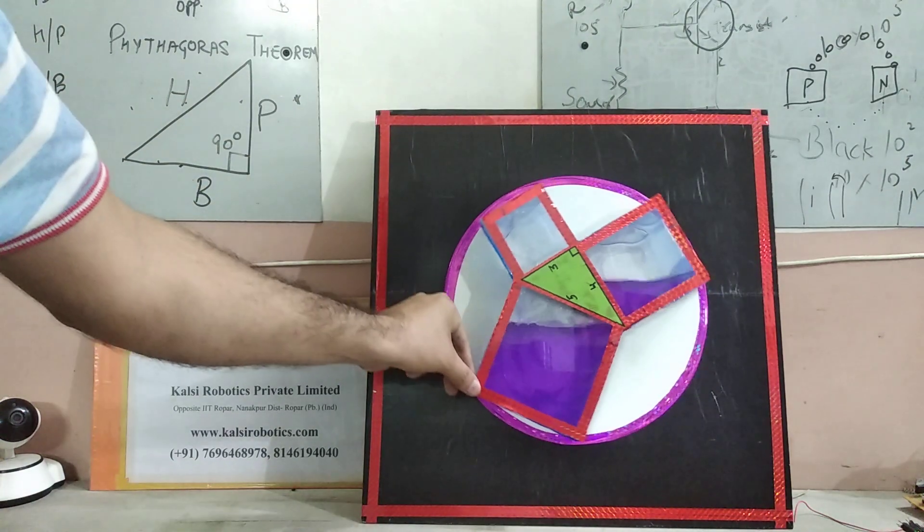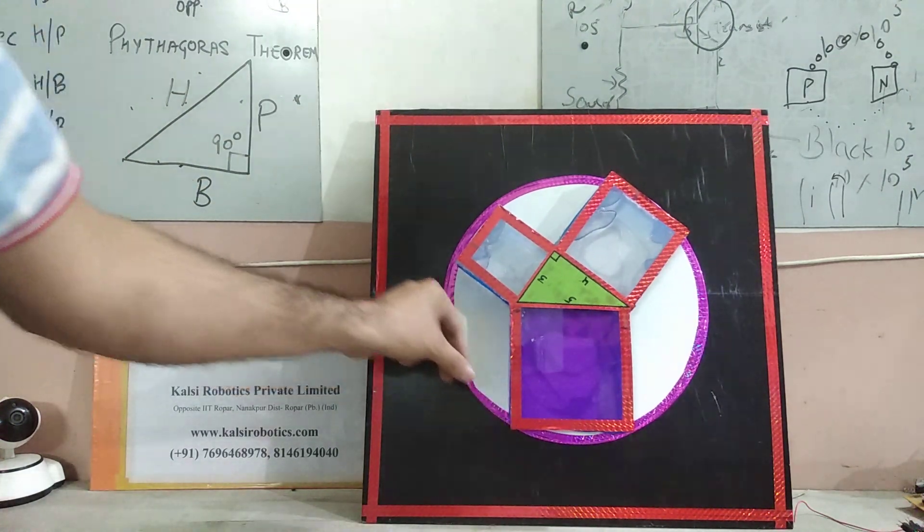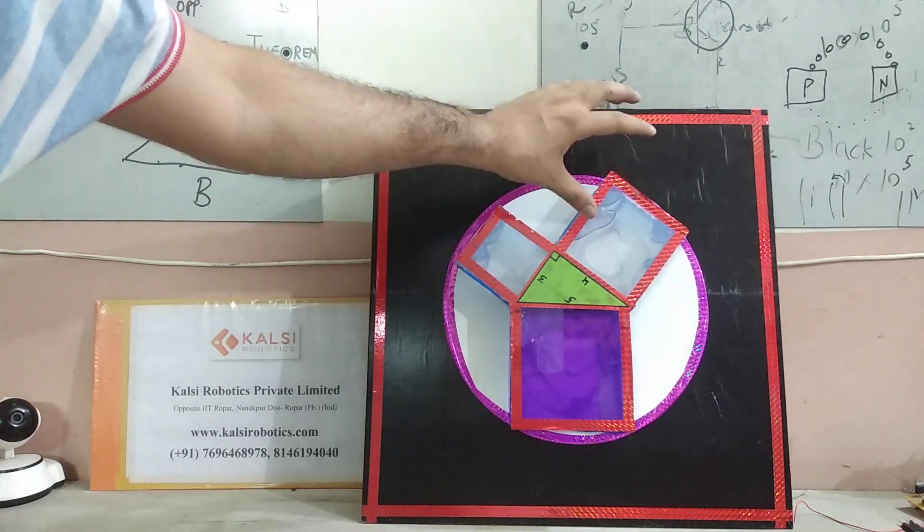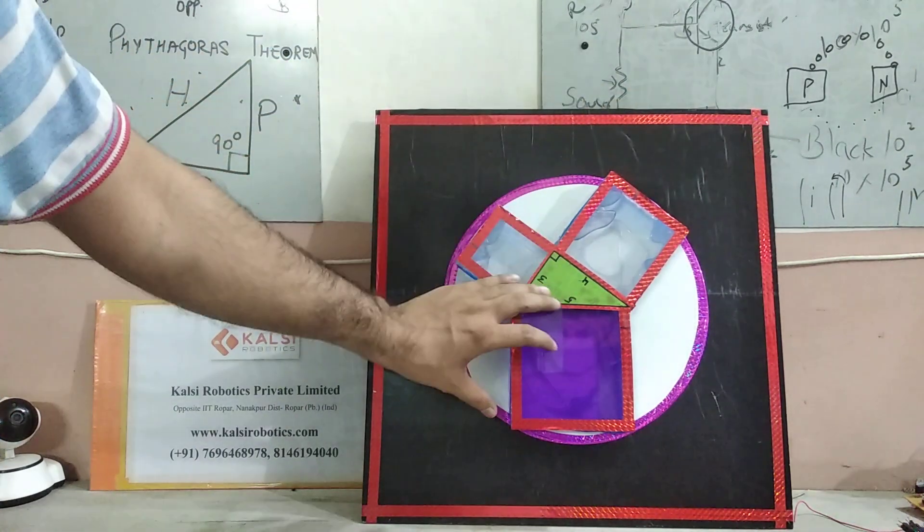So here we prove the theorem. The volume in these both containers is equal to the volume of the bigger one.